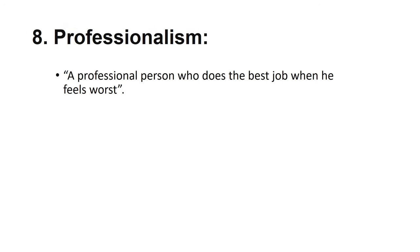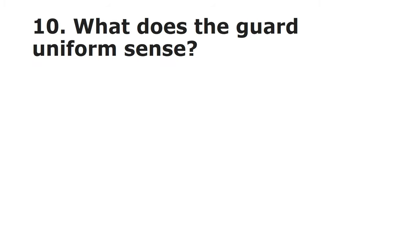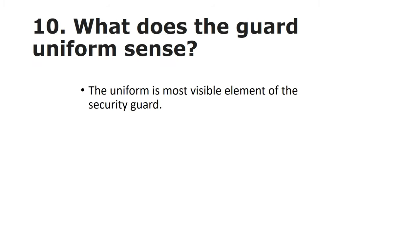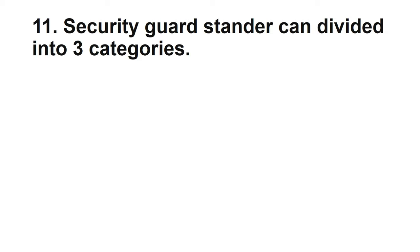Professionalism: a professional person does their best job even when they feel worse. In any circumstances, a professional security guard does their best job. Regarding uniform — it is the most visible element of the security guard. People recognize the security guard by their uniform. Security guard standards can be divided into three categories: clothing, grooming, and equipment. You must maintain your clothes properly, grooming is very important, and knowing how to use your equipment — these three things make you standard.